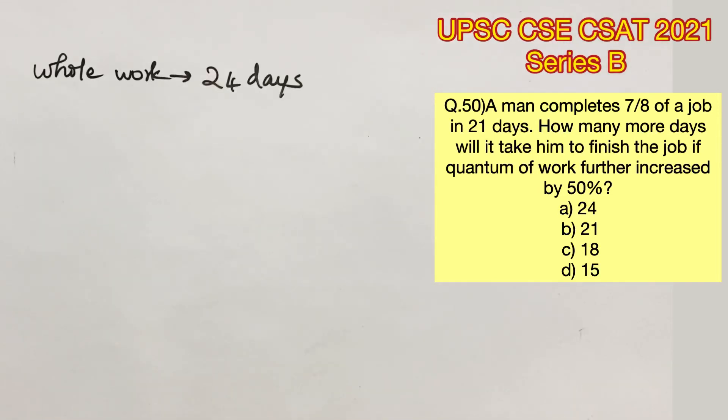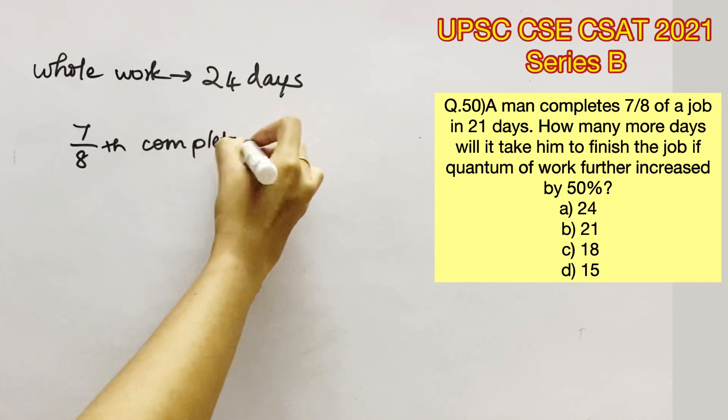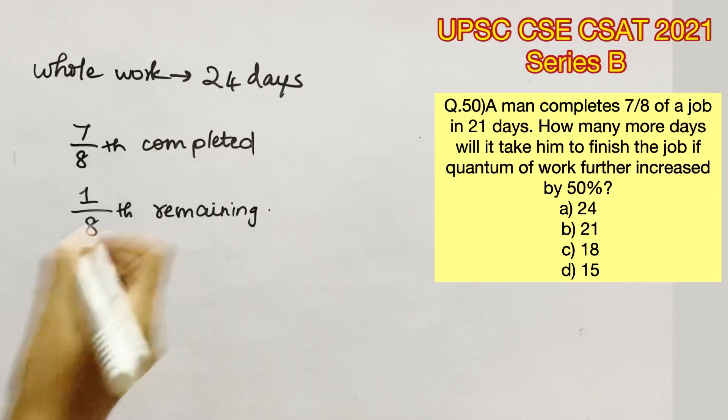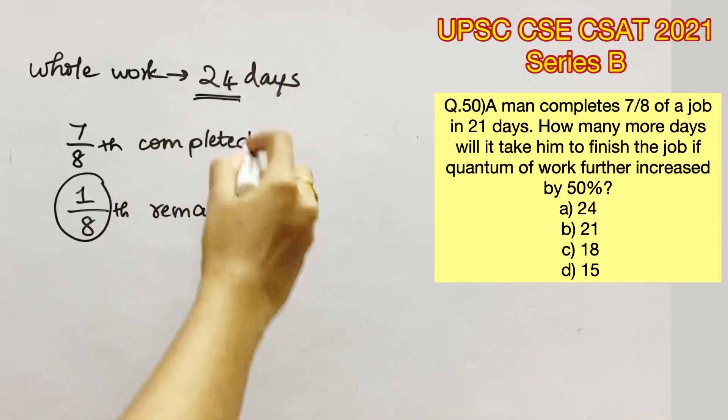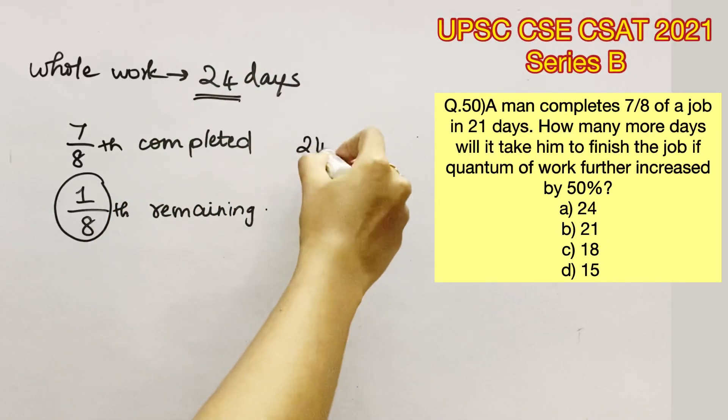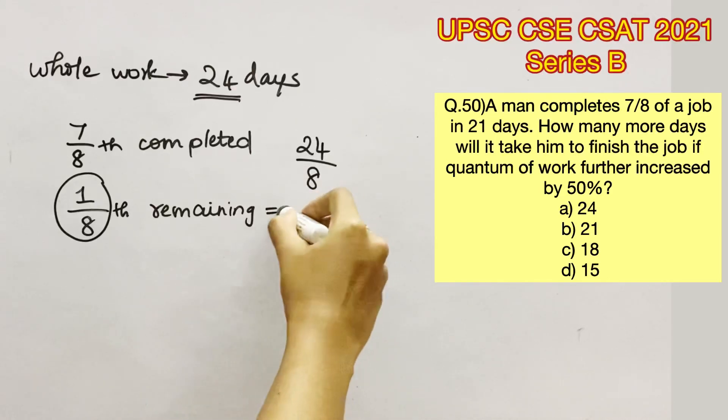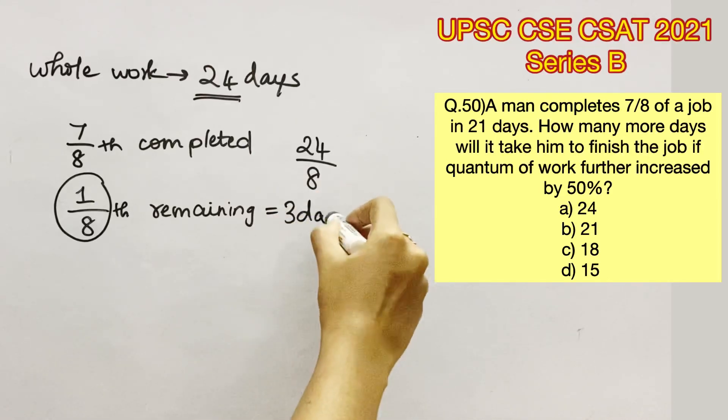So now we have found out that the whole work can be completed in 24 days by that man. He has already completed seven-eighths of the work. Now he has a pending of one-eighth of the work. Since we have found out the total number of days required for the man to complete his job, it's easy to find out how many days it would take for him to complete one-eighth of the work, which is nothing but 24 by 8, that is 3 days.